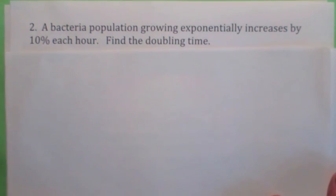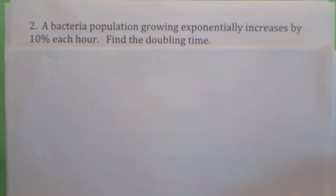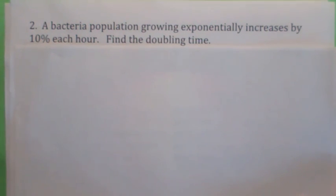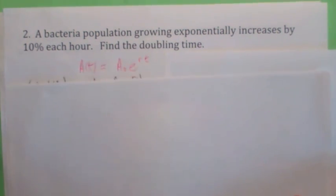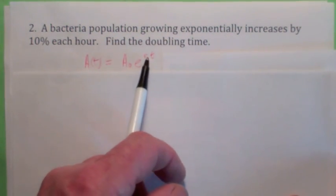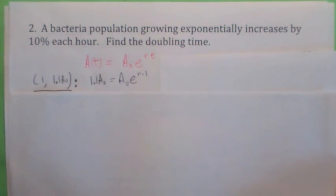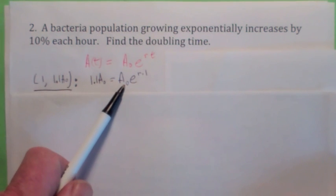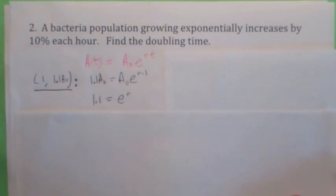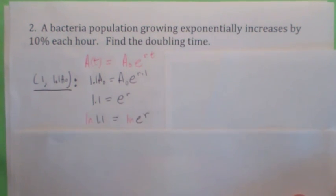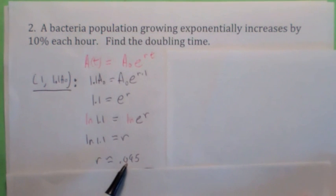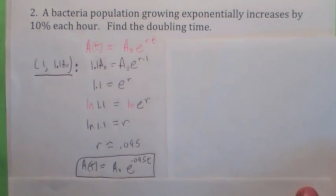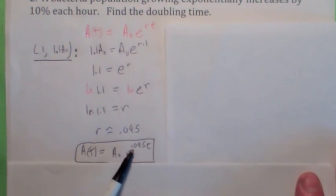In this next problem we have another exponential growth problem. A population of bacteria grows exponentially, increasing by 10% each hour — find the doubling time. Notice they don't tell us how much we start with; it turns out it doesn't make a difference, because the doubling time is independent of how much you start with. Our goal is to find r. At 10% per hour, when t equals 1 the amount present is 1.1 times the initial amount: 1.1 times a-zero equals a-zero times e to the r. The a-zeros cancel, and taking the natural log of both sides gives r equals 0.095. The equation is a-zero times e to the 0.095t.